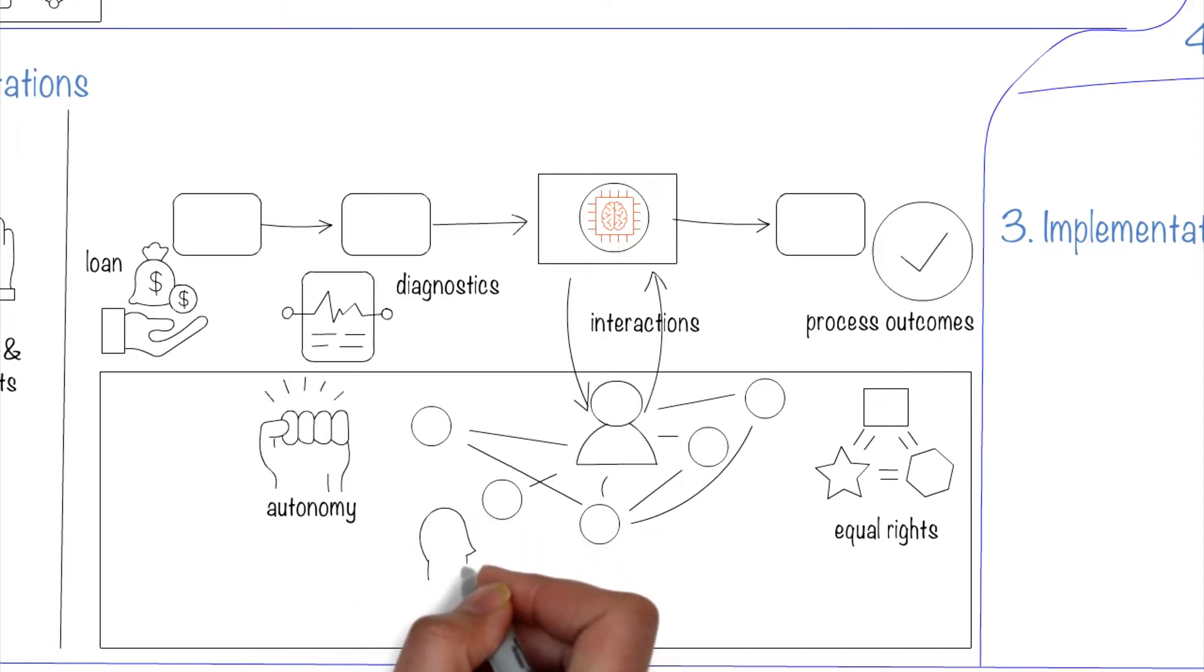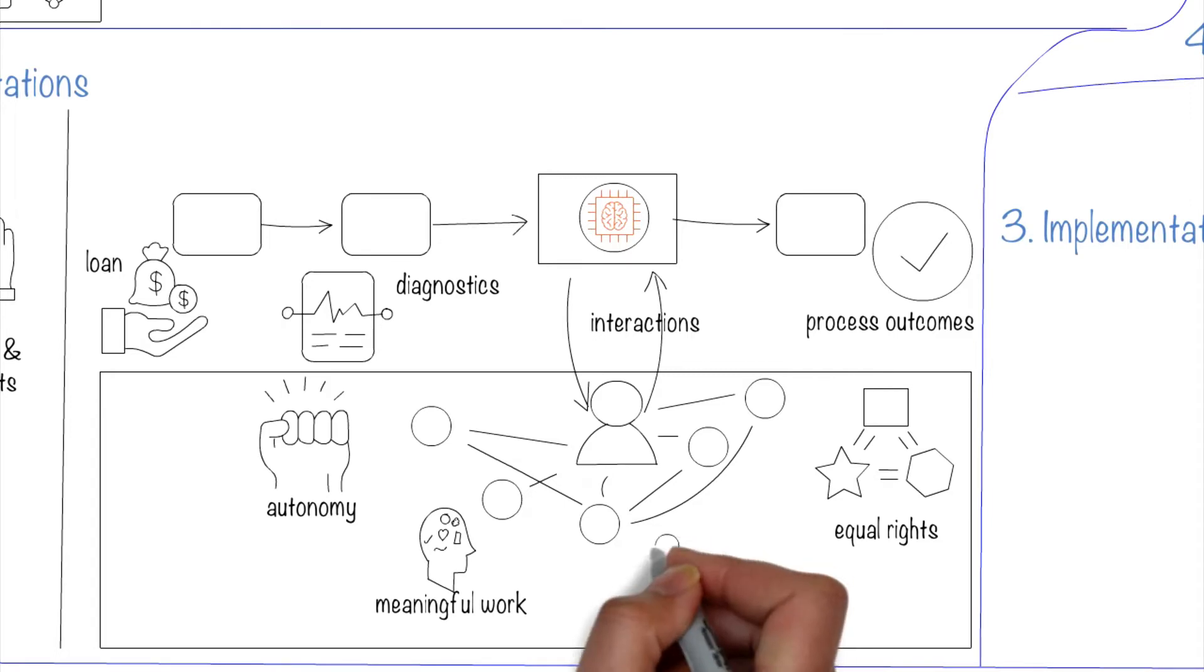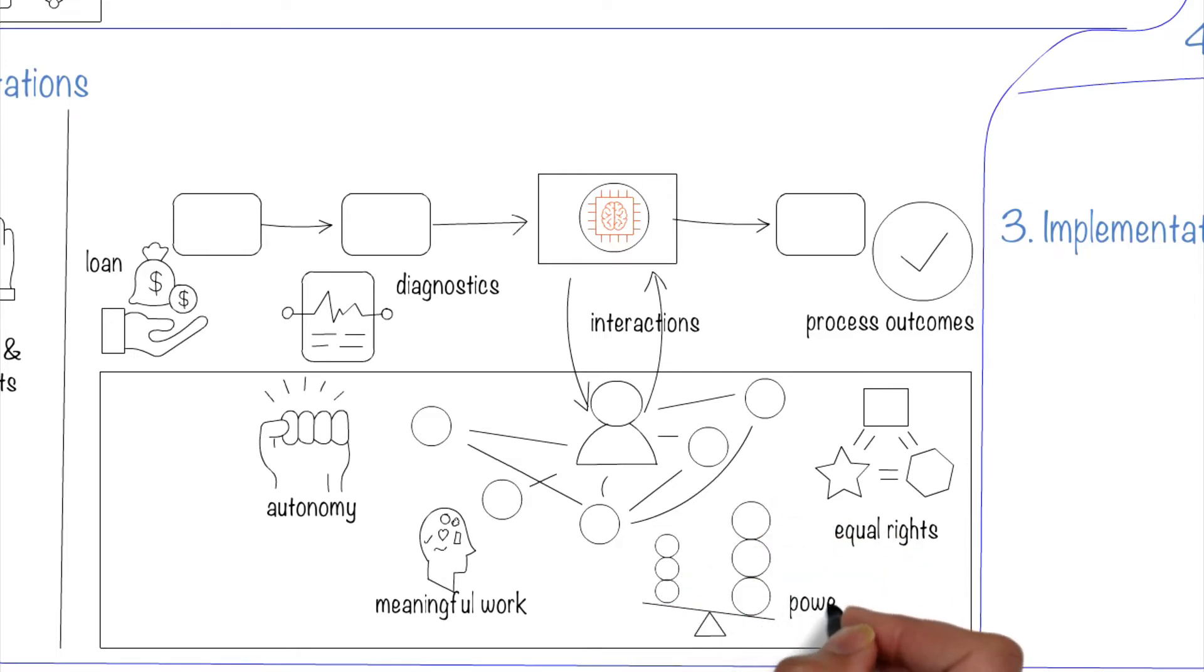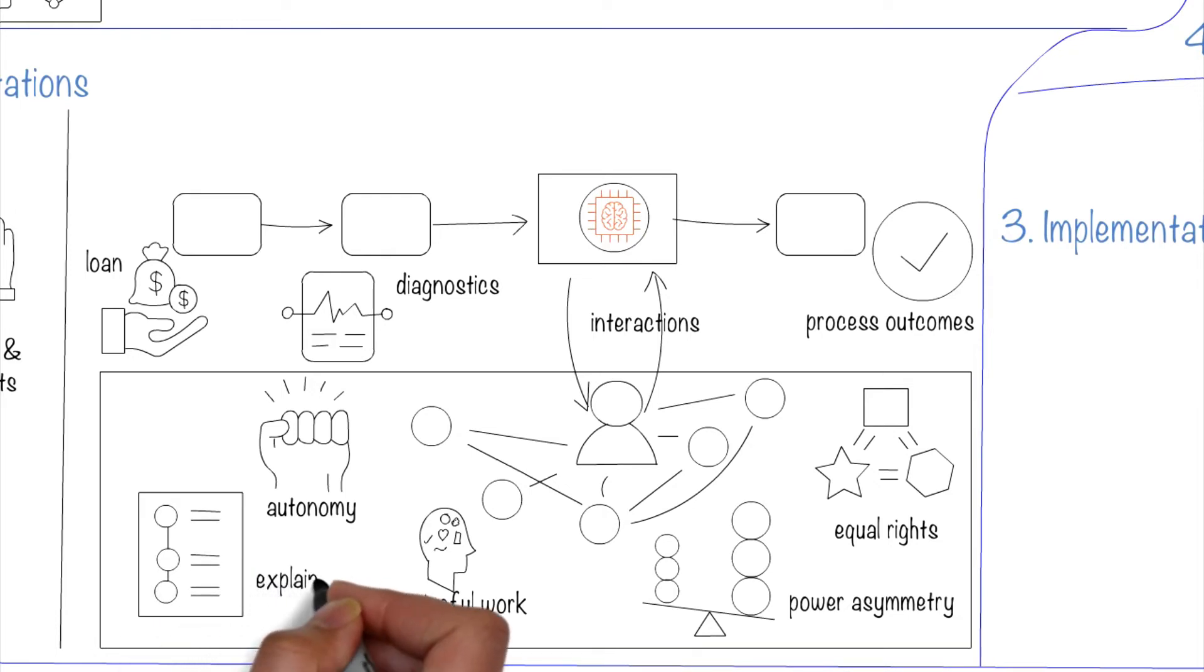It cannot take away meaningful work from human employees. It cannot cause harm to humans, and it should allow for humans to control and manage it. It should not cause an asymmetry of power between, say, an employer and an employee, or a citizen and the government.